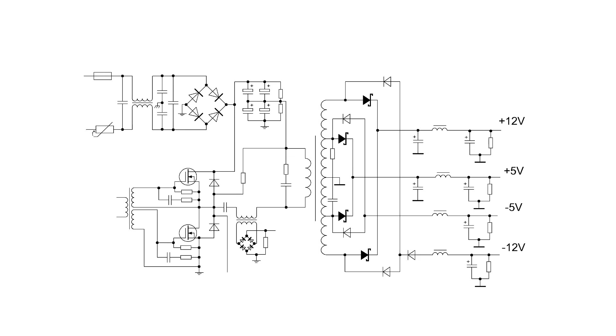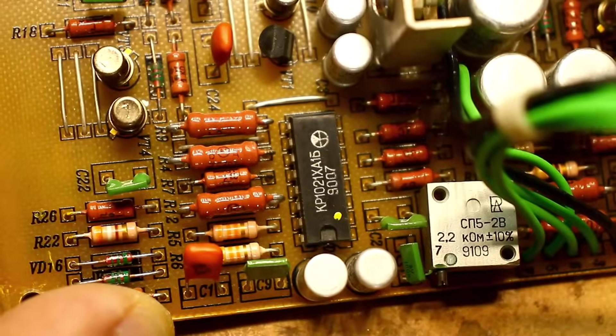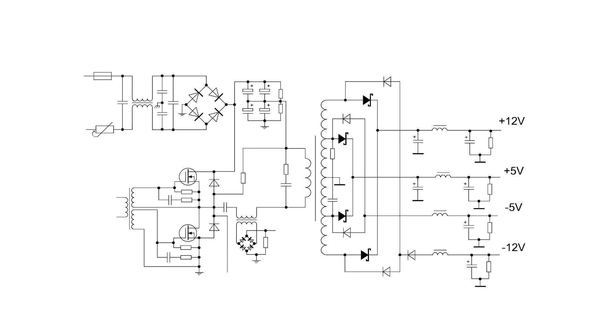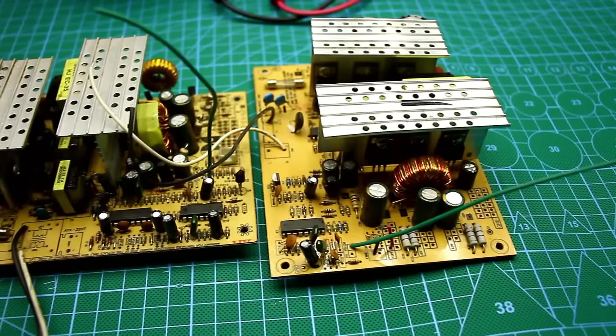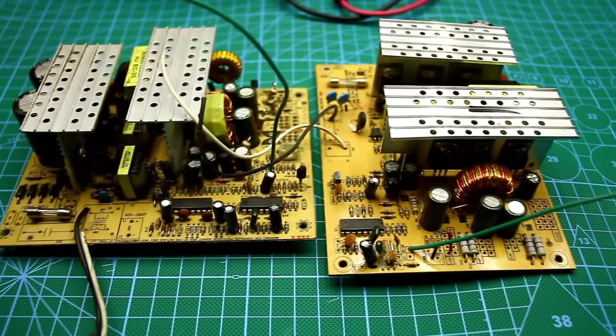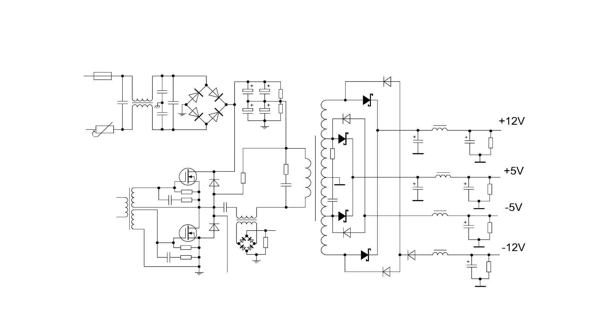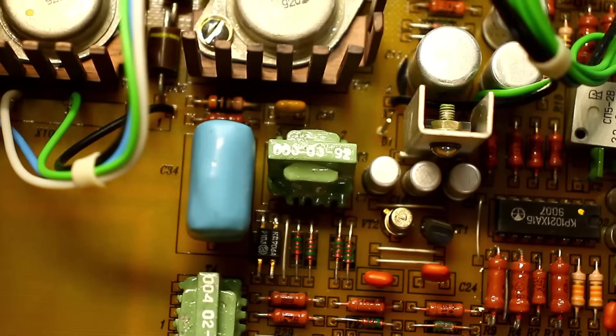I partially copied the schematic to understand how it is constructed and how much it differs from modern ones. I didn't copy the control system, so in front of you is only the power section without some small components that don't change the essence. Anyone knowledgeable in the field has already noticed the classic half-bridge topology here, on which most modern computer power supplies are built. The controller manages the power switches through a matching transformer, which is located on the control board.